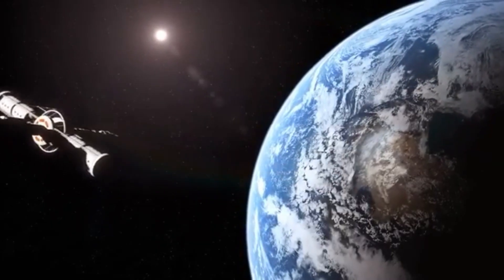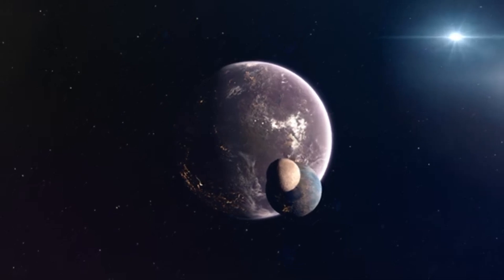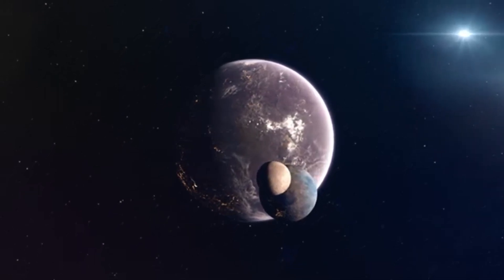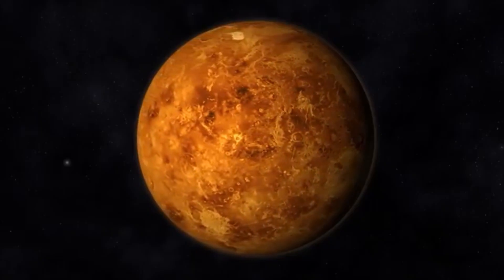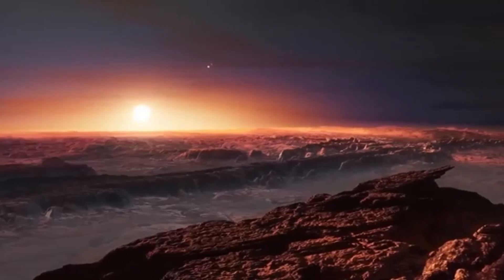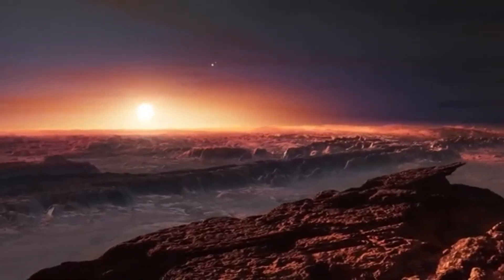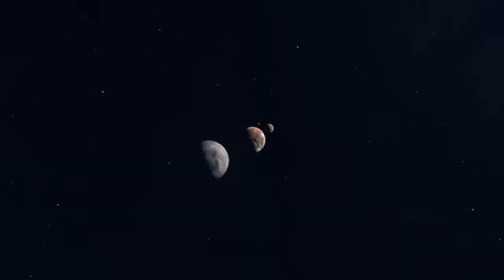However, this task is not without its challenges. Because Proxima b is tidally locked, the permanent light and dark sides may create extreme temperature differences, possibly affecting atmospheric circulation, ocean currents, and surface conditions. Still, theorists suggest that life might adapt in the twilight zone, the area between day and night, where temperatures are more moderate.